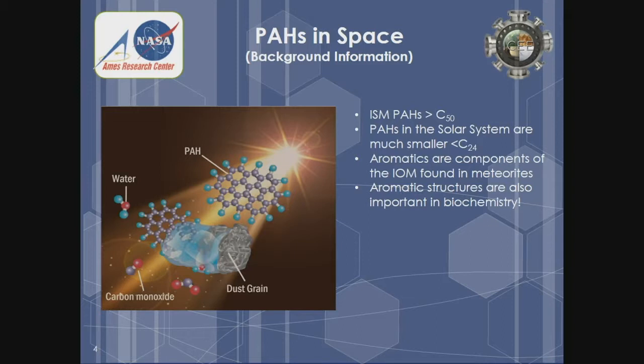PAHs, or polycyclic aromatic hydrocarbons — I think they showed a couple of times this morning — are carbon-hydrogen molecules with cyclic aromatic rings of carbon in them. They're important because they're one of the most abundant sources of carbon in the universe. We find them all over the place, and in the ISM, the interstellar medium, the PAHs tend to be 50 to 100 carbon atoms in size. We also find PAHs within the solar system, but they're typically a lot smaller — we find them in meteorites, interplanetary dust particles, and cometary particles.